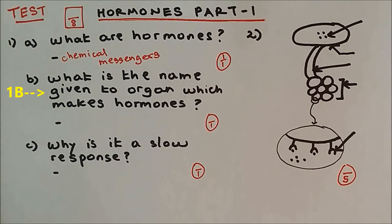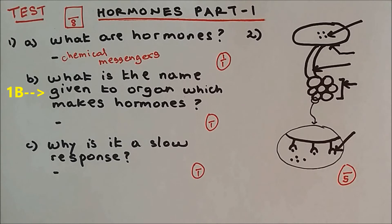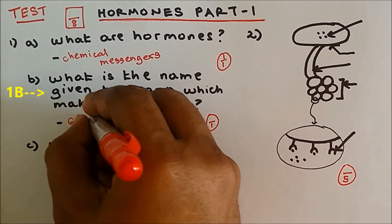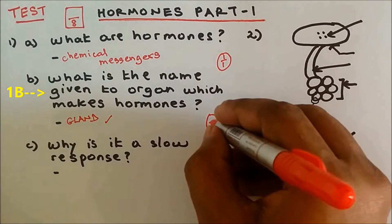Question 1B. What is the name given to the organ which makes hormones? All the hormones are made in the organ called gland. One out of one.